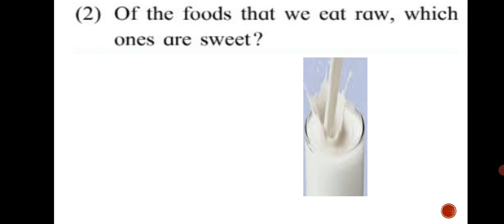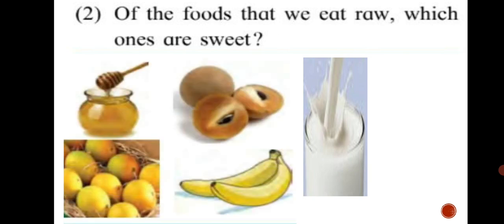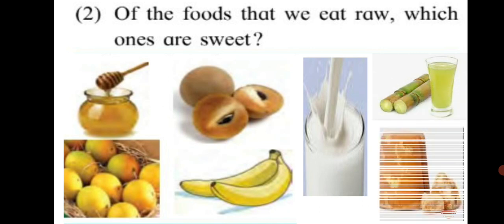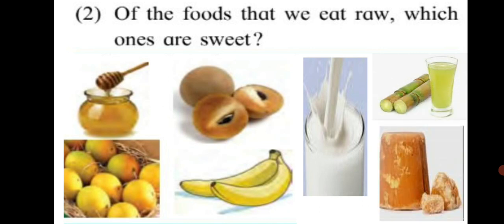Of the foods that we eat raw, which ones are sweet? You can see milk here. Along with that, ripe fruits, honey, sugarcane juice, and jaggery are the foodstuffs that can be eaten raw and also they are sweet to taste.